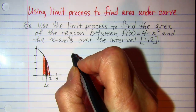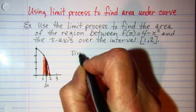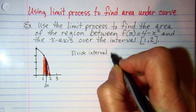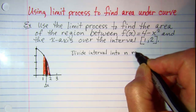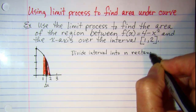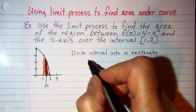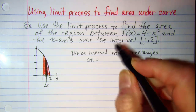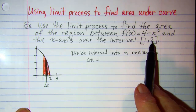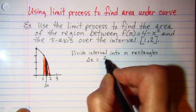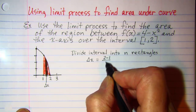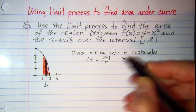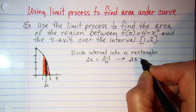Our first step is to divide the interval into n rectangles. The width of my representative rectangle, my delta x, is the upper bound minus the lower bound divided into n rectangles: (2 minus 1) over n. This simplifies to 1 over n, so my delta x is 1 over n.